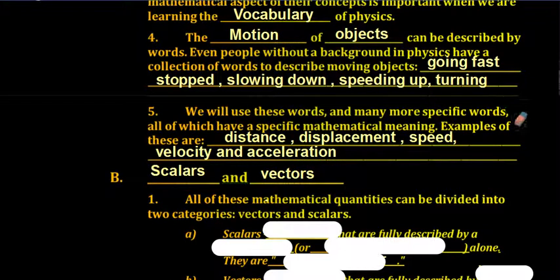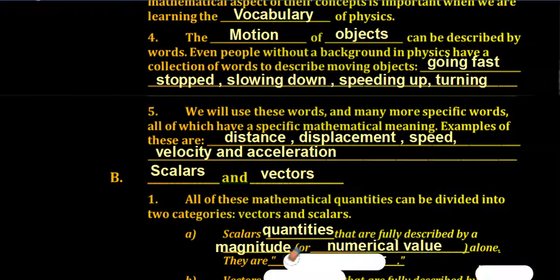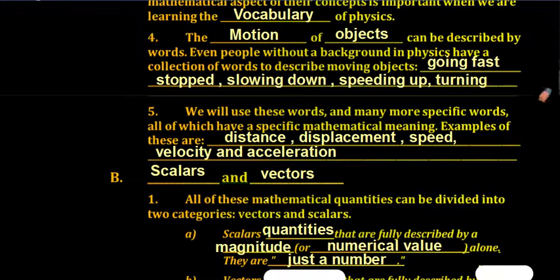Scalars are quantities that are fully described by a magnitude or a numeric value alone — they are just a number. They usually have a unit, and the smallest a scalar can possibly be is zero, unless you have some sort of calibration issue where you allow things to go negative.